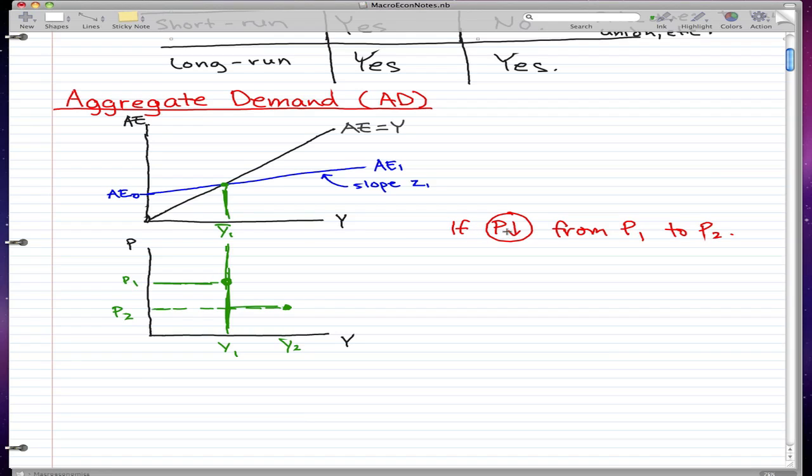If we draw a line through these two arbitrary points that I have, we'll have something like this.